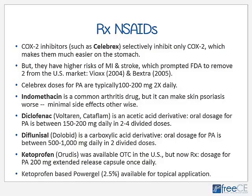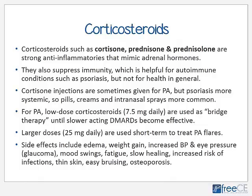Ketoprofen (Orudis) was available over the counter in the U.S. but is now by prescription; dosage for severe PA or RA is 200 milligrams extended-release once daily, and a ketoprofen-based power gel at 2.5 percent strength is also available for topical application. Corticosteroids such as cortisone, prednisone, and prednisolone are strong anti-inflammatories that mimic the adrenal hormones of the body, and they also suppress immunity quite strongly.